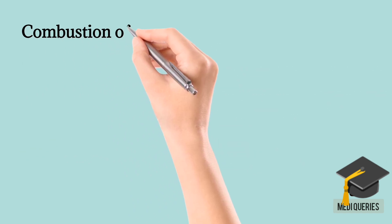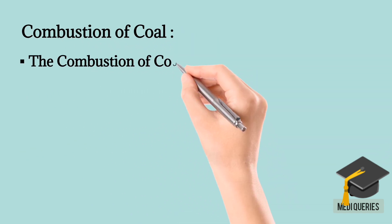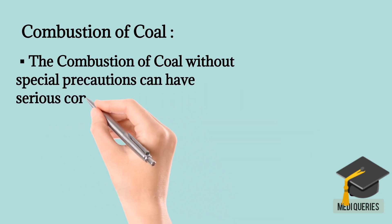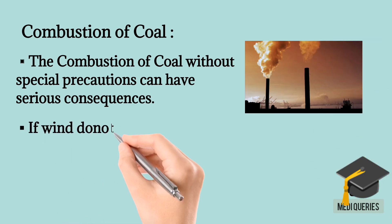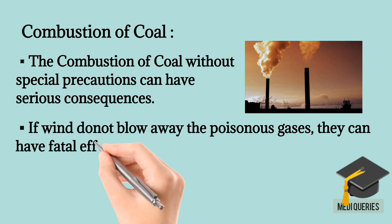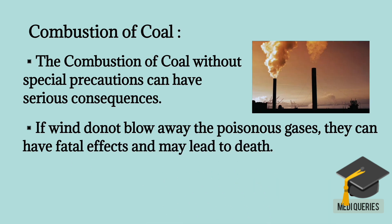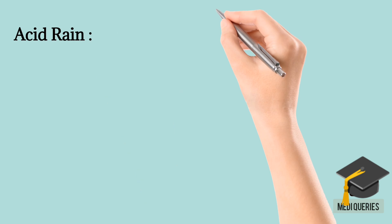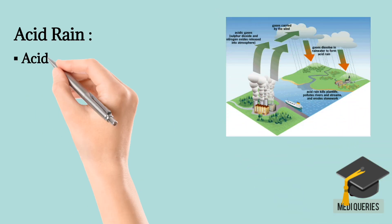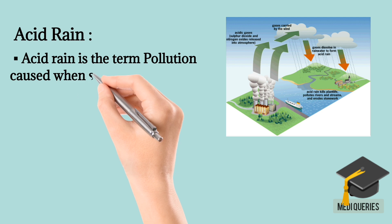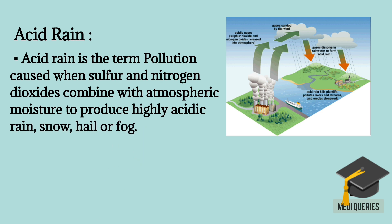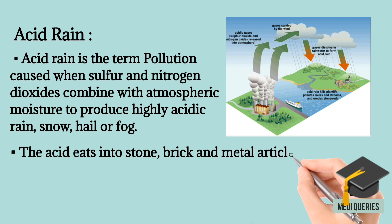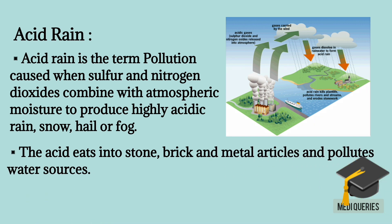Combustion of Coal. Combustion of coal without special precautions can have serious consequences. If wind does not blow away the poisonous gases, they can have fatal effects and may lead to death. Acid Rain is the term for pollution caused when sulfur and nitrogen dioxide combine with atmospheric moisture to produce highly acidic rain, snow, hail, or fog. The acid eats into stone, brick, and metal articles, and pollutes water sources.